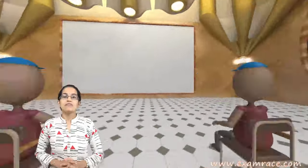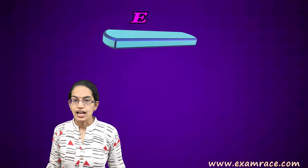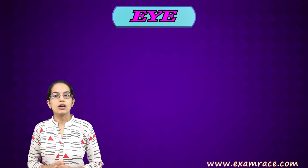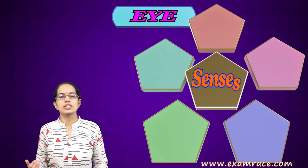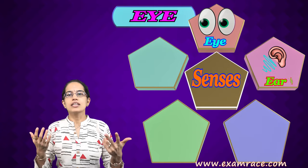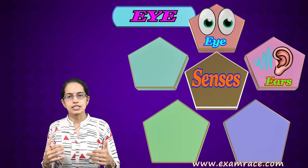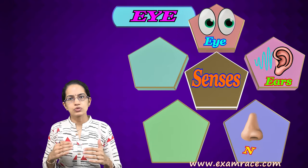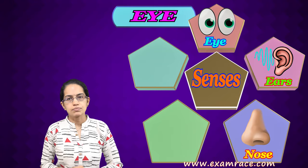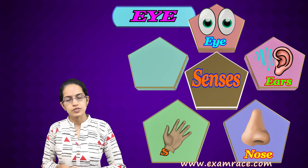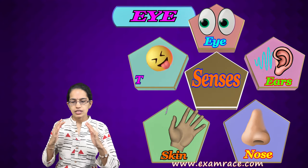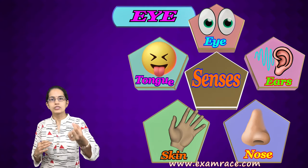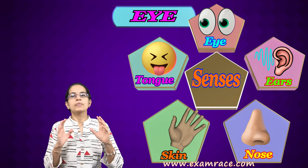Today we would be beginning with a very interesting topic, and that is the eye, one of the major sense organs. We already know there are five sense organs: we have the eye, ears, the sense of smell through the nose, the touch receptors present in the skin, and the tongue which basically senses taste.